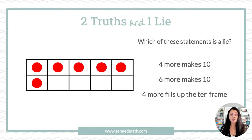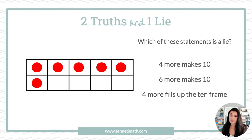In this routine, Two Truths and One Lie is literally what it sounds like: you create two statements that are true and one statement that's a lie. And obviously the statements are math statements.